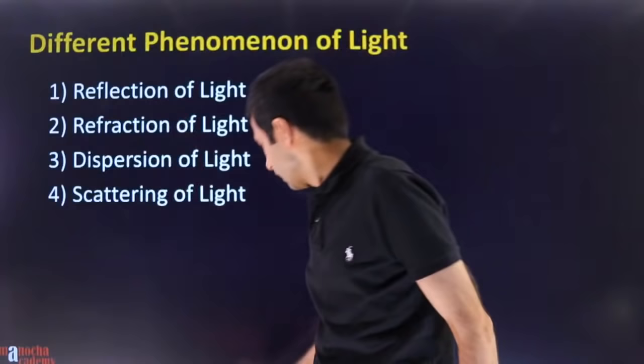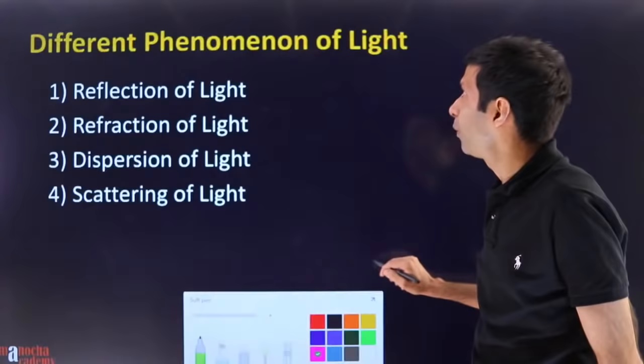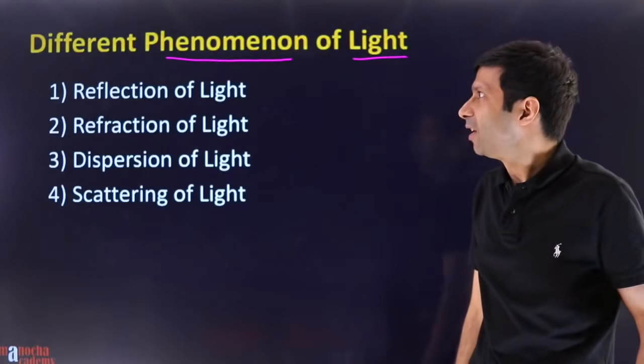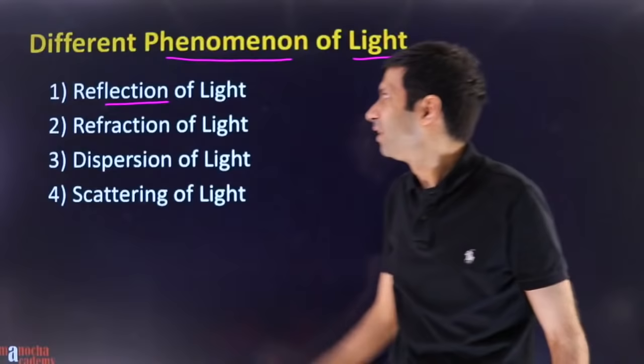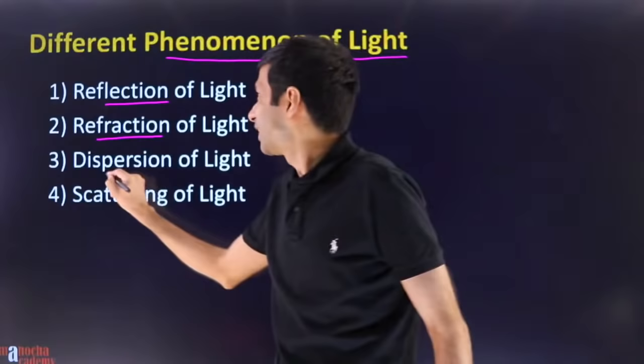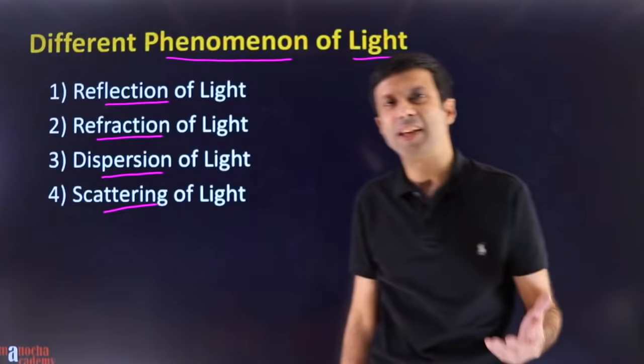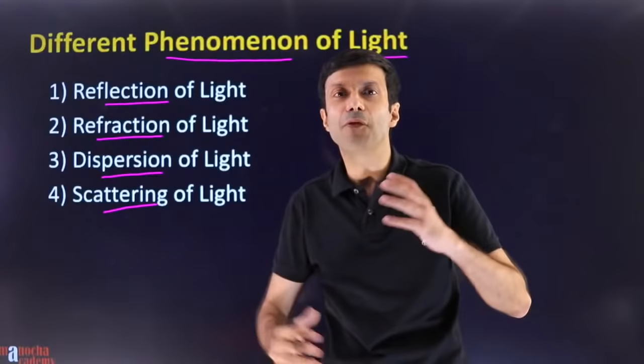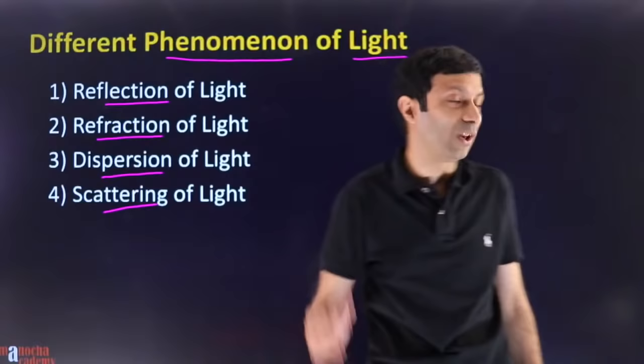Today we are going to look at the different phenomena of light. Light is a very interesting thing — there is reflection of light, refraction of light, dispersion of light, and scattering of light. These are all the different phenomena that light shows, and we are going to talk about all of them. Let's start with reflection of light first.